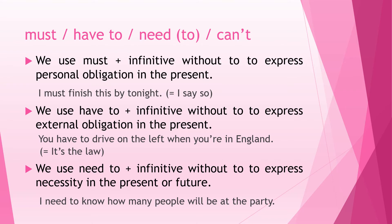We use 'have to' plus the infinitive without 'to' to express external obligation in the present — the obligation comes from outside, such as a rule or law. For example: 'You have to drive on the left when you're in England,' or 'You have to wear your uniform to school because it is the rule.' We use 'need to' plus the infinitive without 'to' to express necessity in the present or future — there is a need for something in order to do something else. Example: 'I need to know how many people will be at the party.'